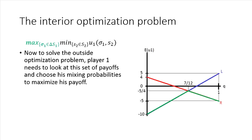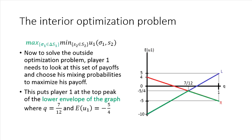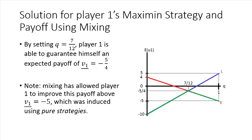So player one needs to look at this set of payoffs and choose his mixing probability to maximize his payoff along that lower envelope there. And you'll notice the payoff that does that for him is going to be negative 5 fourths, which corresponds to player one playing Q with exactly the probability 7 over 12 to put him at the top of that lower envelope of the graph. What that implies is that by setting Q equal to 7 over 12,